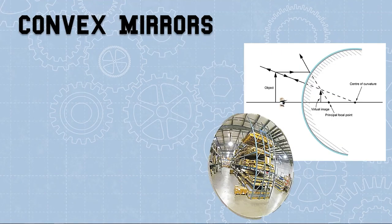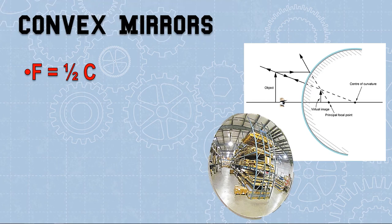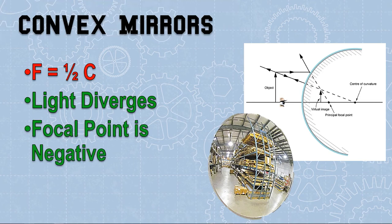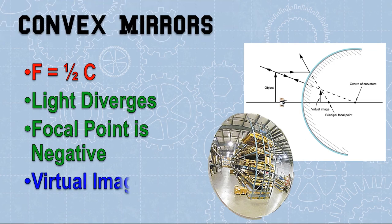Convex mirrors are also based on a circle, but the reflective surface is on the outside, not the inside. The focal length is equal to half of the center of curvature, which is the same as the radius of the circle. The light diverges — it spreads out as it reflects off the outside of the convex mirror. Because of the shape of the convex mirror, the focal point is negative because it's behind the mirror. Convex mirrors are always going to give you the same image: virtual. You may see these virtual upright images created in warehouses or around corners and driveways.